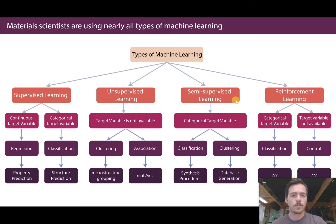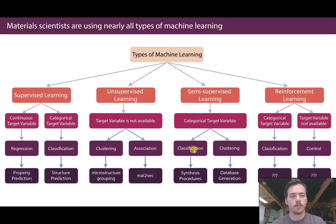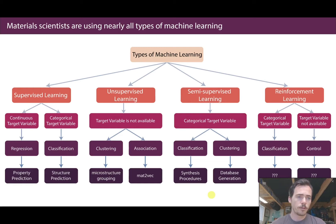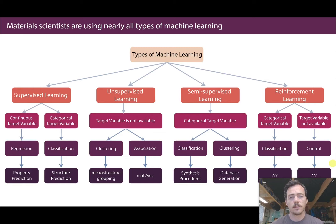In semi-supervised learning you have some labeled data but it's typically a small fraction of your total data. You might have a categorical target variable which you then want to classify or cluster. This has been done in material science — synthesis procedures generated from literature articles, and clustering to create databases. Reinforcement learning can lead to things like classification or control; at the time this was made there weren't many material science examples, though a few have since emerged.